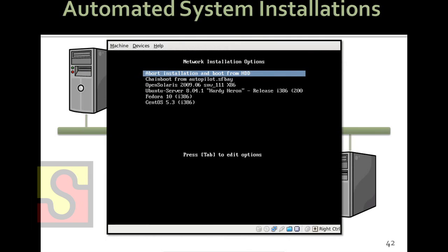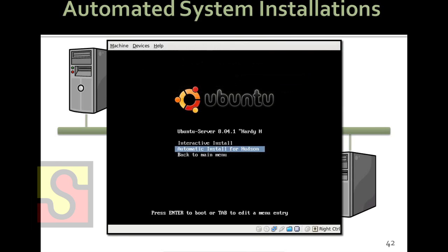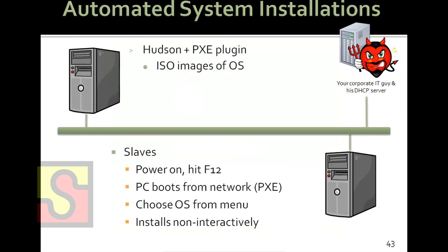If you hit F12 while the machine is booting, most modern PCs will start booting from the network — this is called the PXE boot mode. The Hudson plugin at that point starts interacting with these slaves and gives you the choice of operating system configured on the master. You can choose the OS you want to install and then choose automatic installation for Hudson. You can also do a normal interactive installation, which colleagues like when acquiring a laptop or desktop.